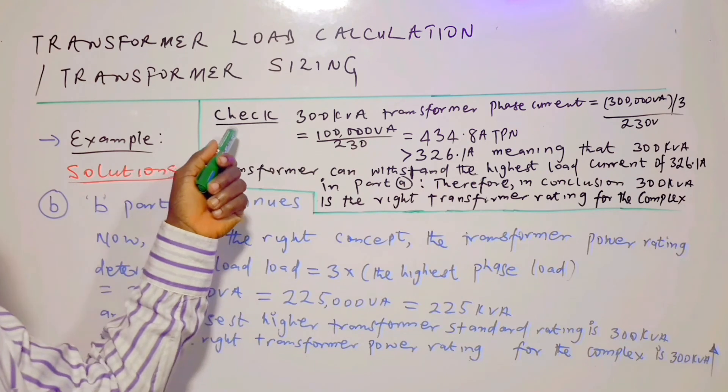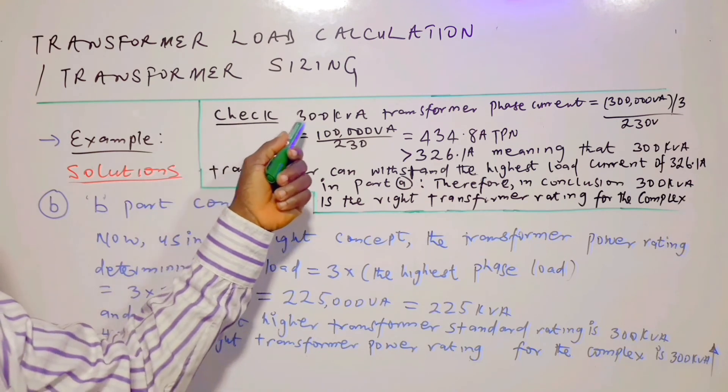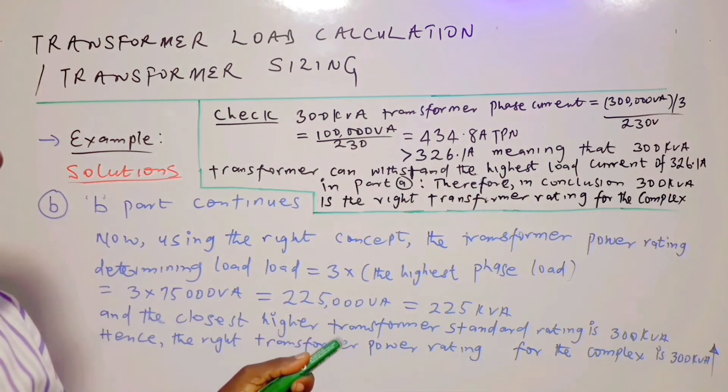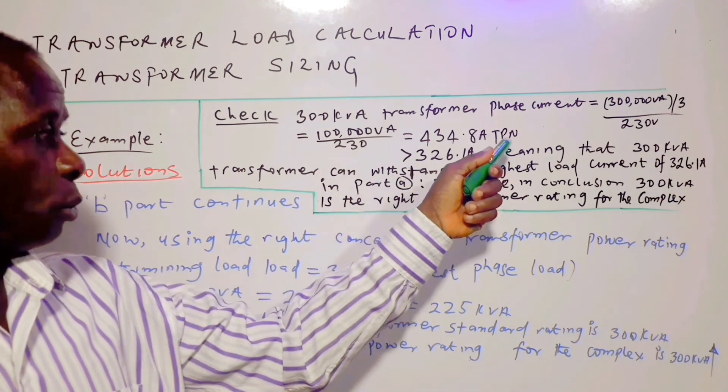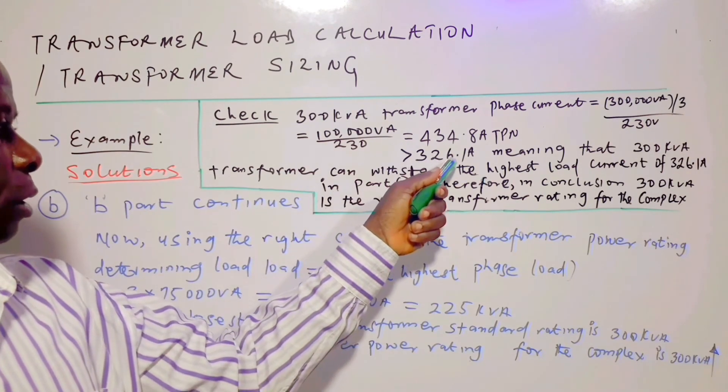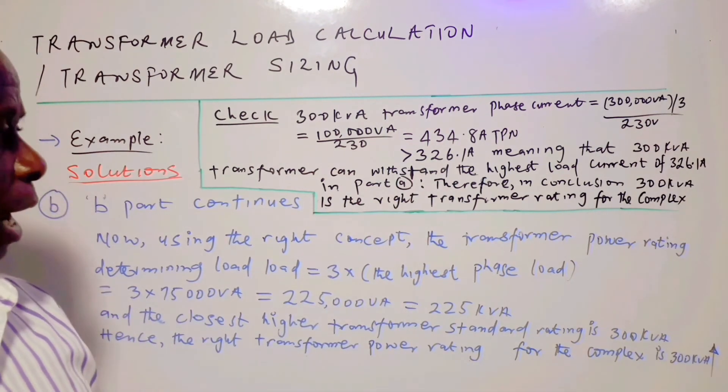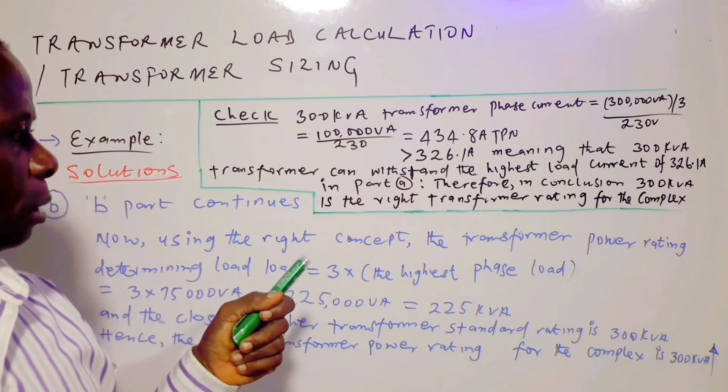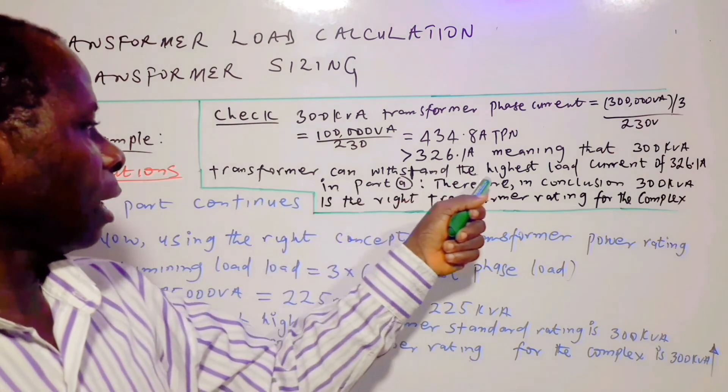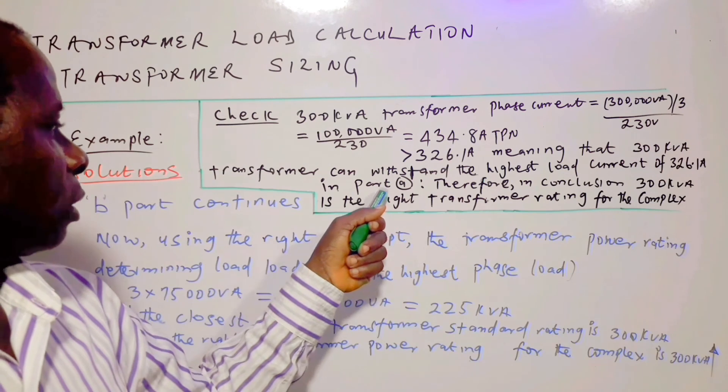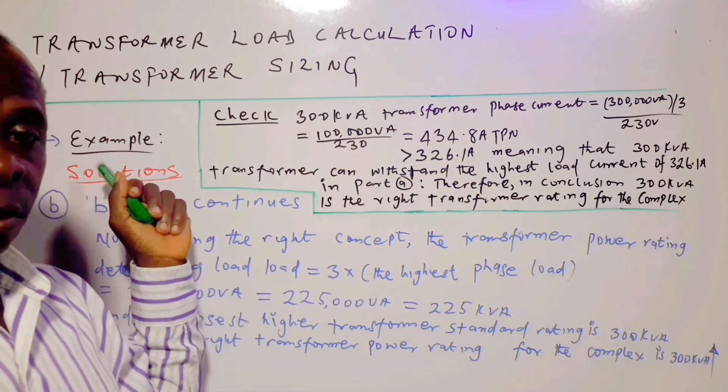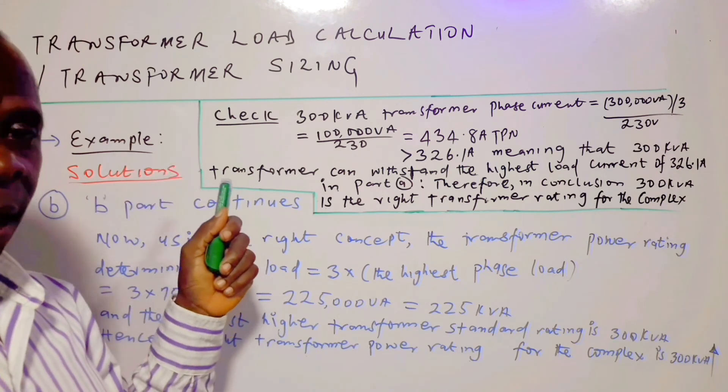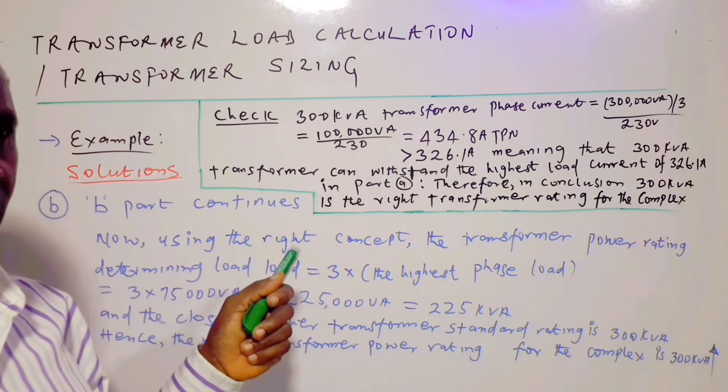And one can check. And that one can be done as follows. We can calculate the phase current of a 300 kVA transformer. And this is the answer to that. And that is greater than 326.1 ampere, which is the highest current to be drawn by the red phase load as given by the question. And that means that 300 kVA transformer can withstand the highest load current of 326.1 ampere in part A. That is the phase current that we calculated in part A. And that is the highest current that we can get from the given power rating or power requirement of the complex.